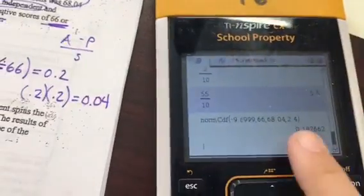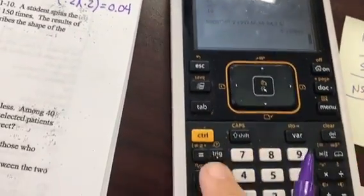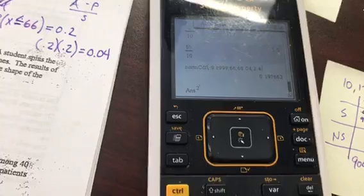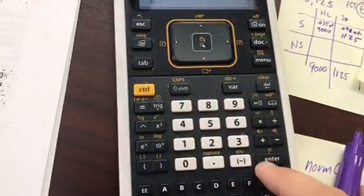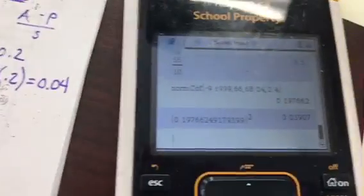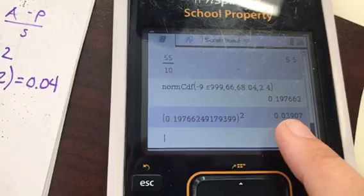We could have also done it in our calculator. We can just square that answer. And yep, my answer would round up to 0.04. Same answer.